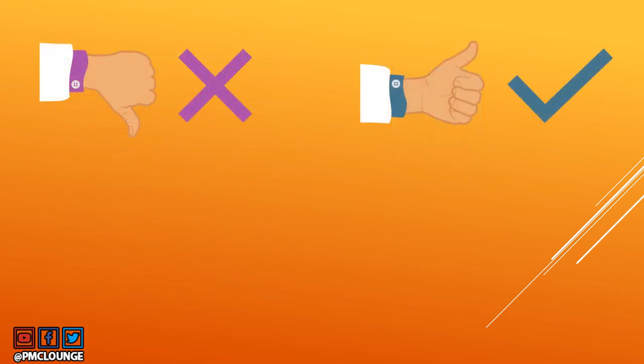Before discussing Theory X and Theory Y, what you see on the screen right now is a good way to remember them. Theory X gets a thumbs down, while Theory Y resonates with a right tick mark — something which is right. Theory Y gets a thumbs up. I hope you're able to remember Theory X and Theory Y with these thumb signs.